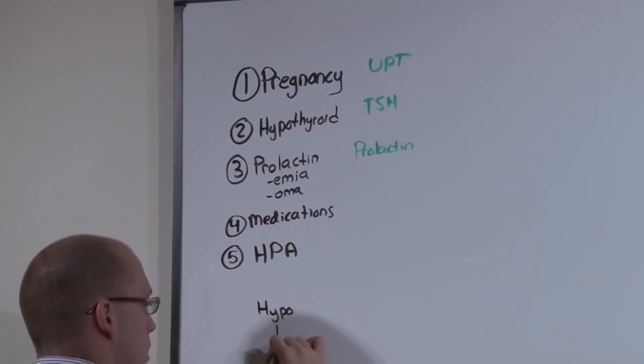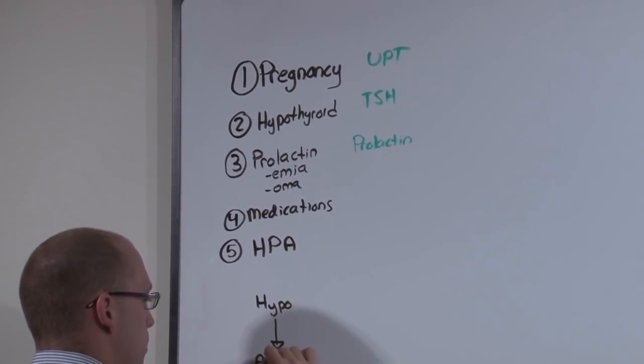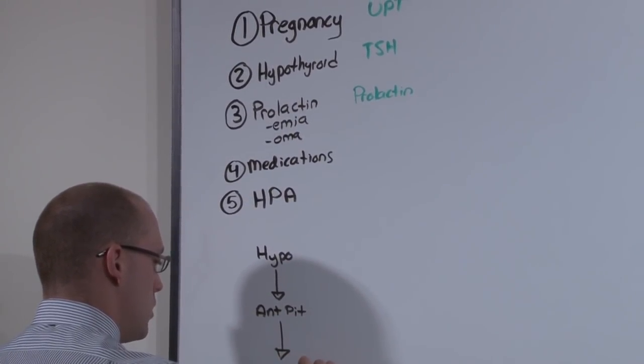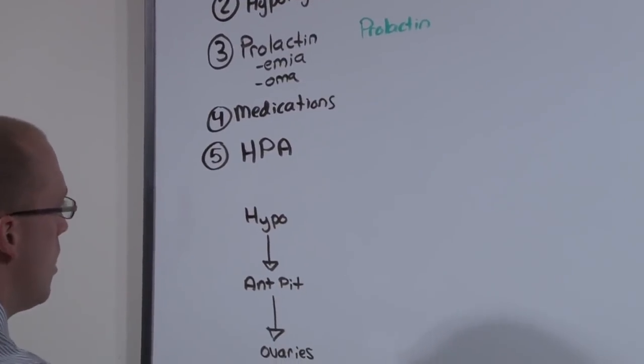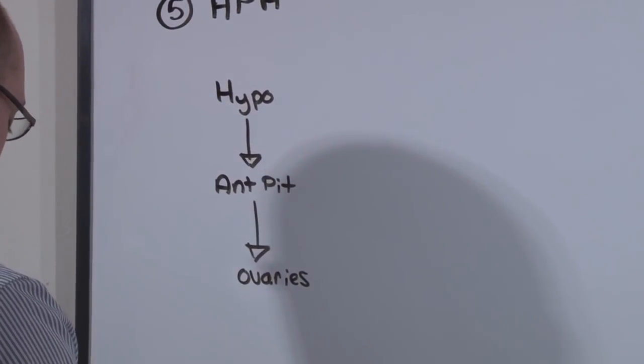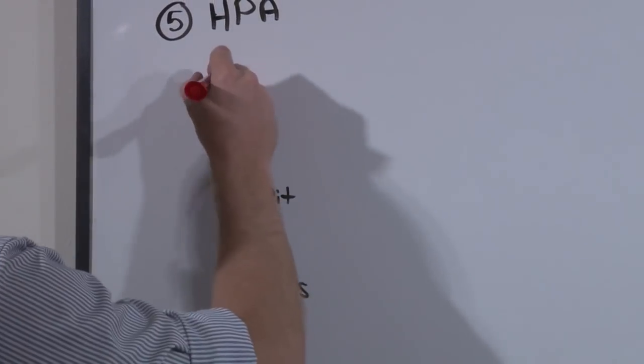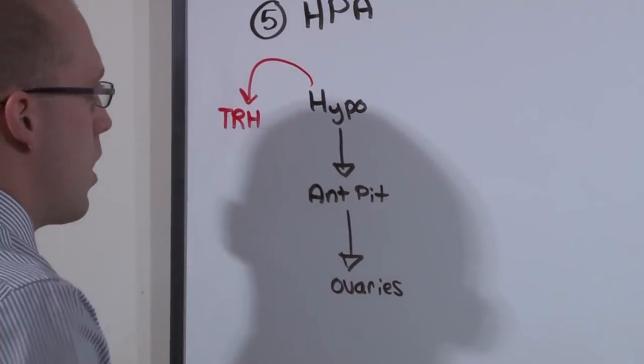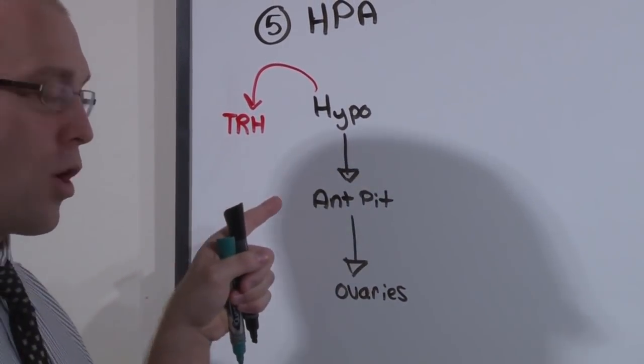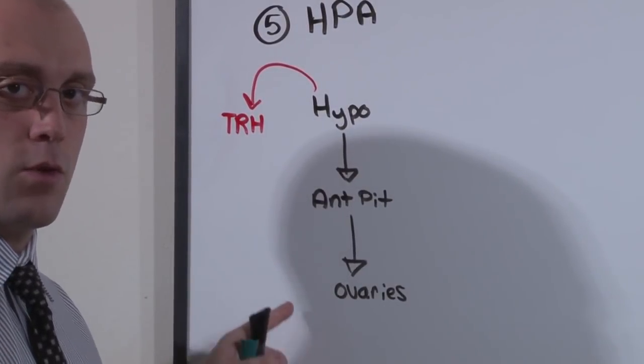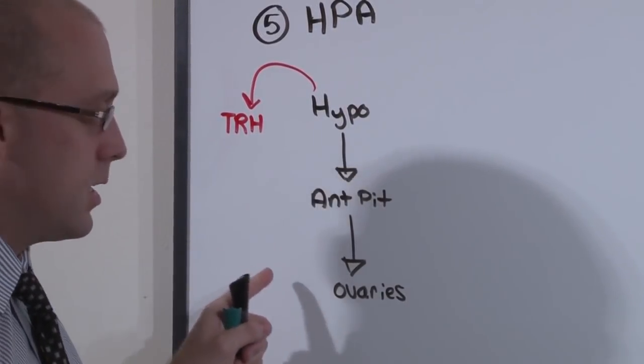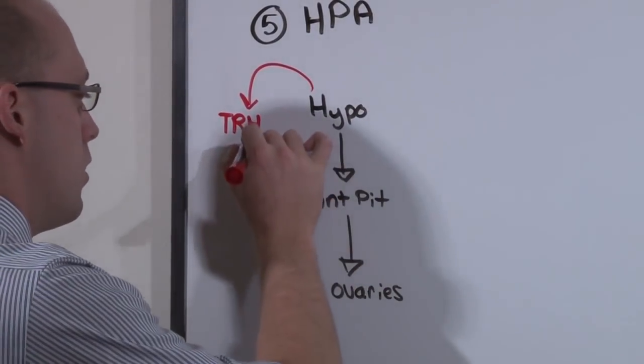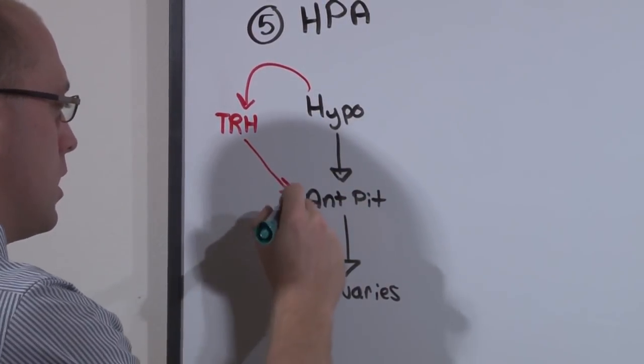The hypothalamus tells the anterior pituitary to tell the ovaries to make the uterus bleed. The hypothalamus produces TRH. And for this graphic, anything in red is going to turn off the reproductive axis. That is, it's going to induce secondary amenorrhea. The hypothalamus secretes TRH.